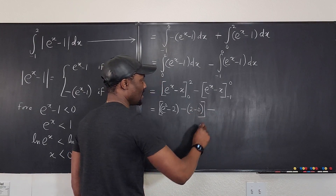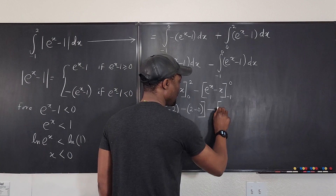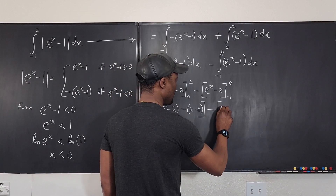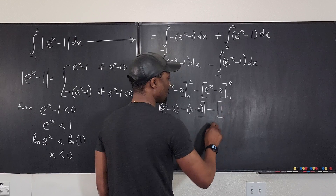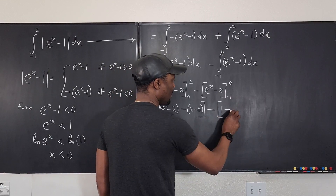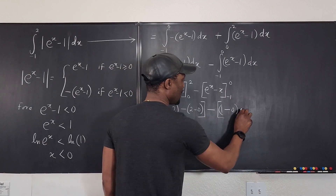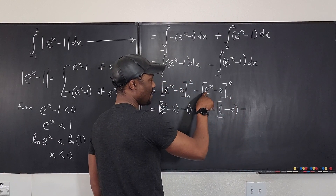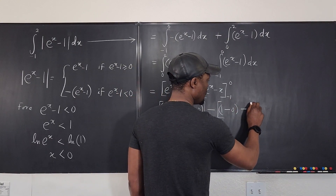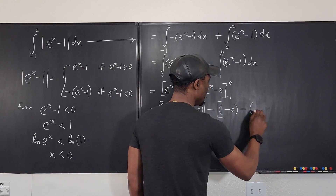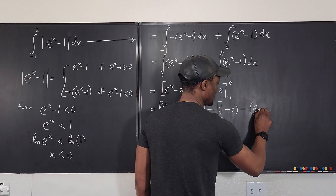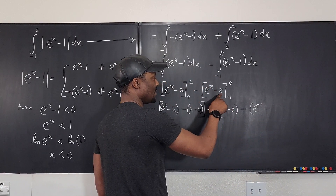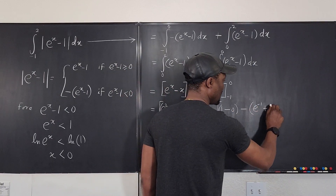Okay, we're done with that. The next one — we have e to the zero, which is going to be one, minus zero. Minus, this is going to be e to the negative one — let's write it like that, e to the negative one. And then if this is negative one, this becomes plus one.